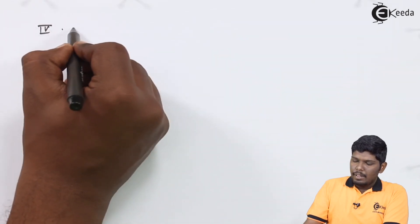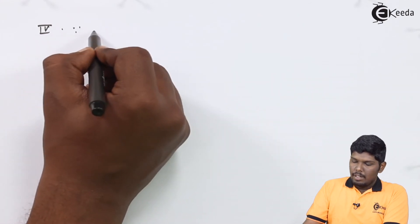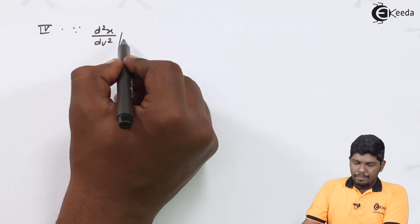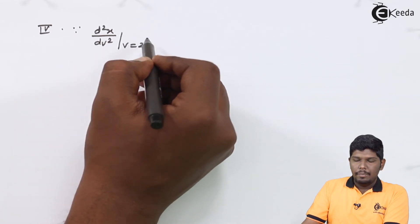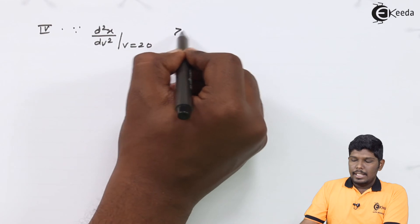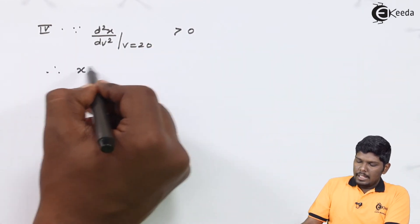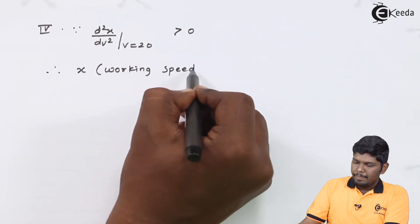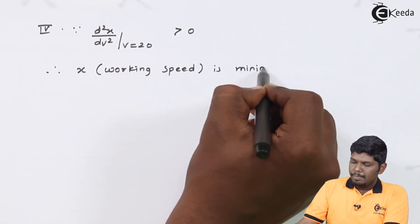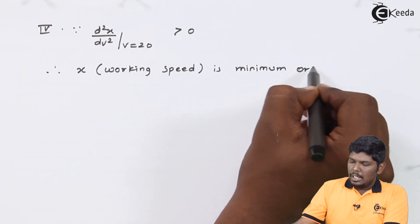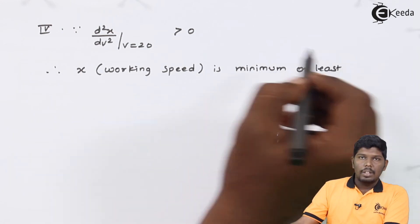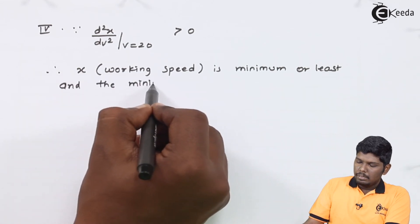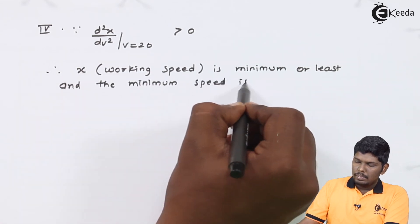In step 4, since d²X by dV square at V equals 20 is greater than 0, therefore X, you can say working speed, is minimum or least. And the minimum speed is given as X equals 10V plus 4000 upon V.